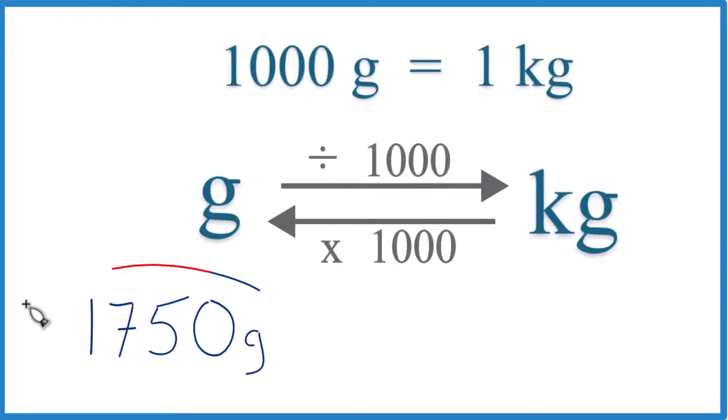If you need to convert from 1,750 grams to kilograms, here's how you do it. You need to know that 1,000 grams equals 1 kilogram. We call this our conversion factor, and we need it when we're going from grams to kilograms or kilograms to grams.